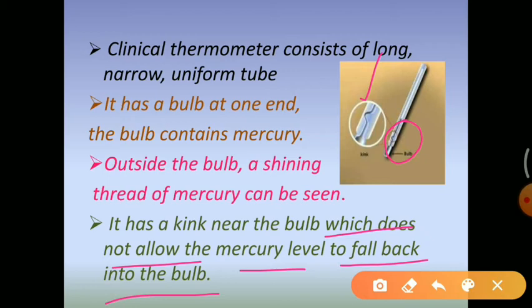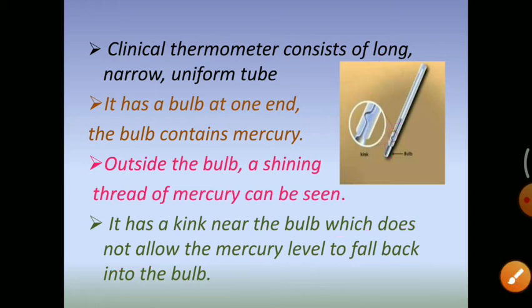You will observe a bent or kink like this. The function of this kink is it helps to hold the temperature measurement in the thermometer. Suppose you have measured your body temperature with the clinical thermometer and you take it out of your mouth. If this kink is not present, the mercury will start falling back into the bulb and you will not be able to get the accurate measurement. So this kink helps to hold the measurement — that's why it is very important.